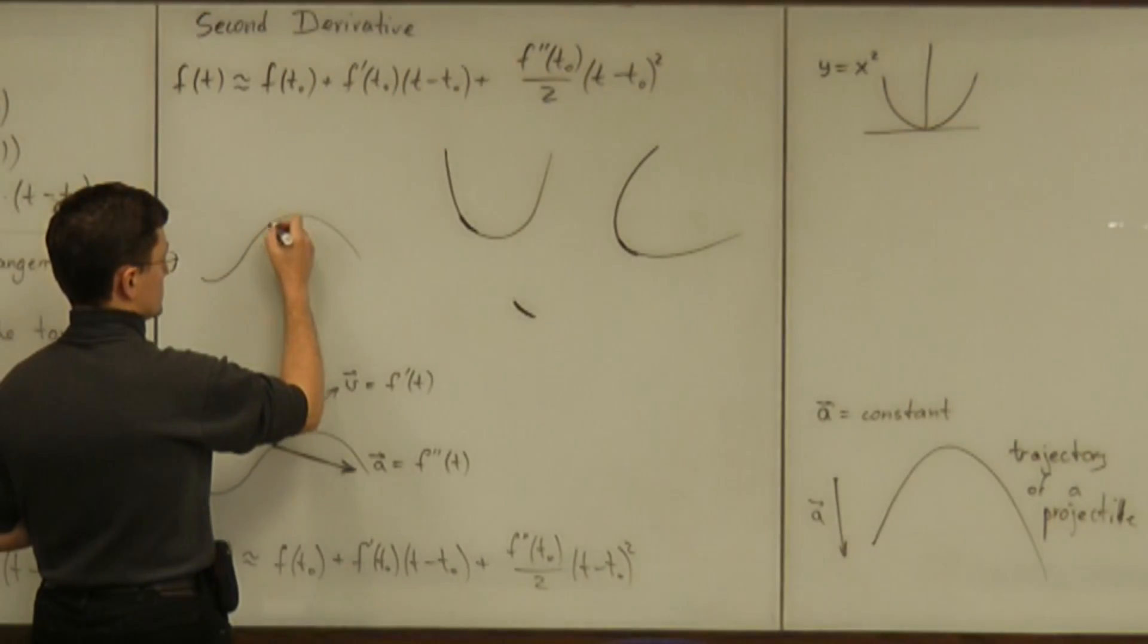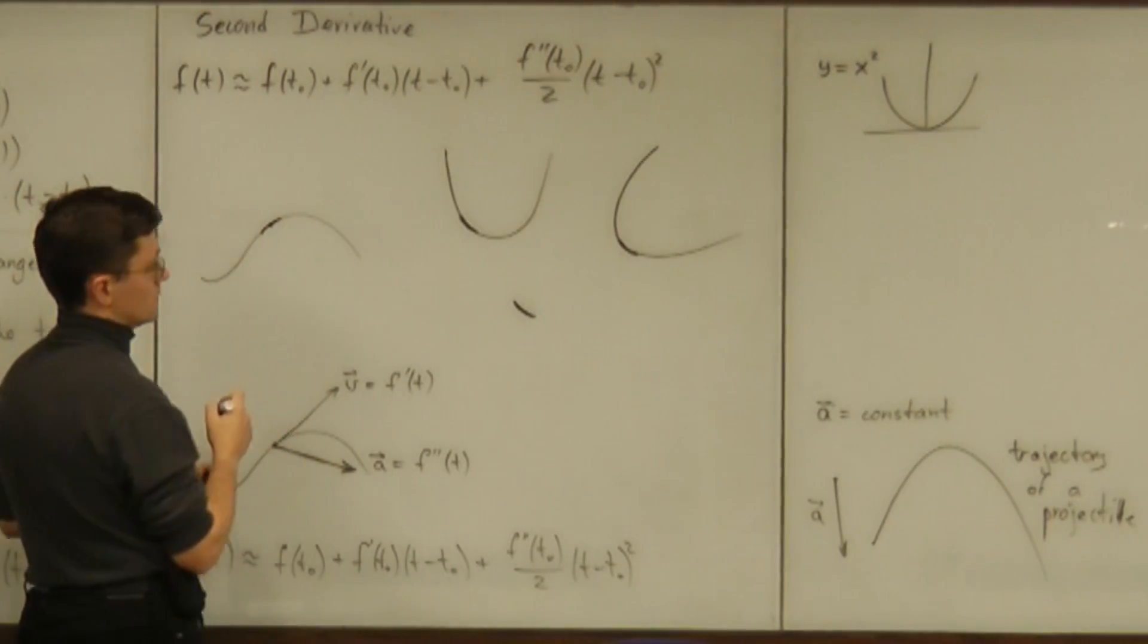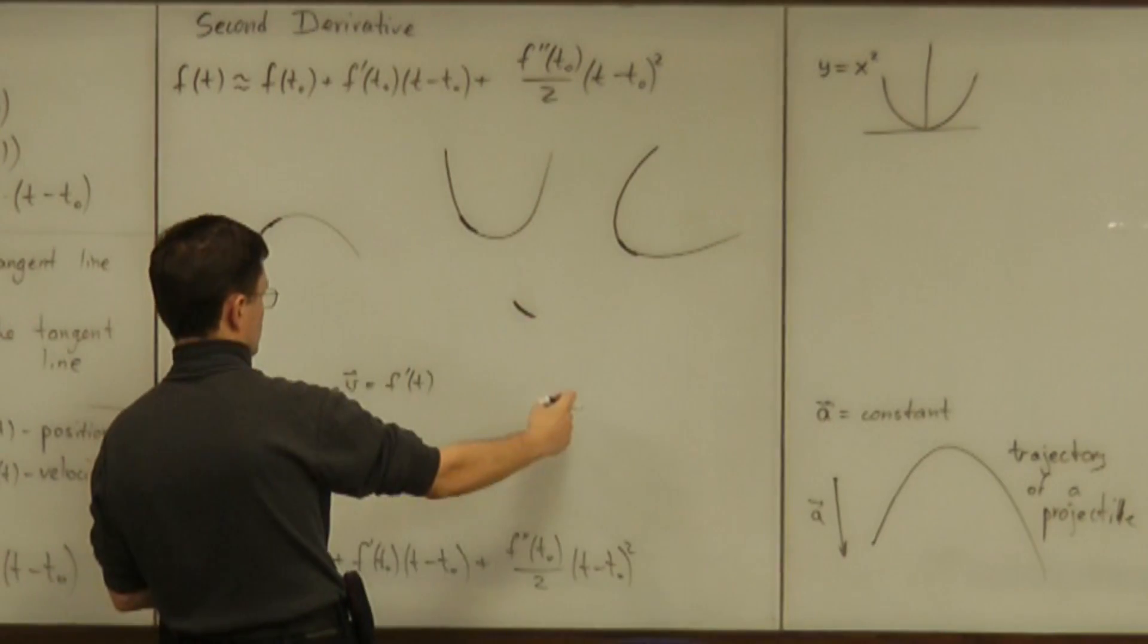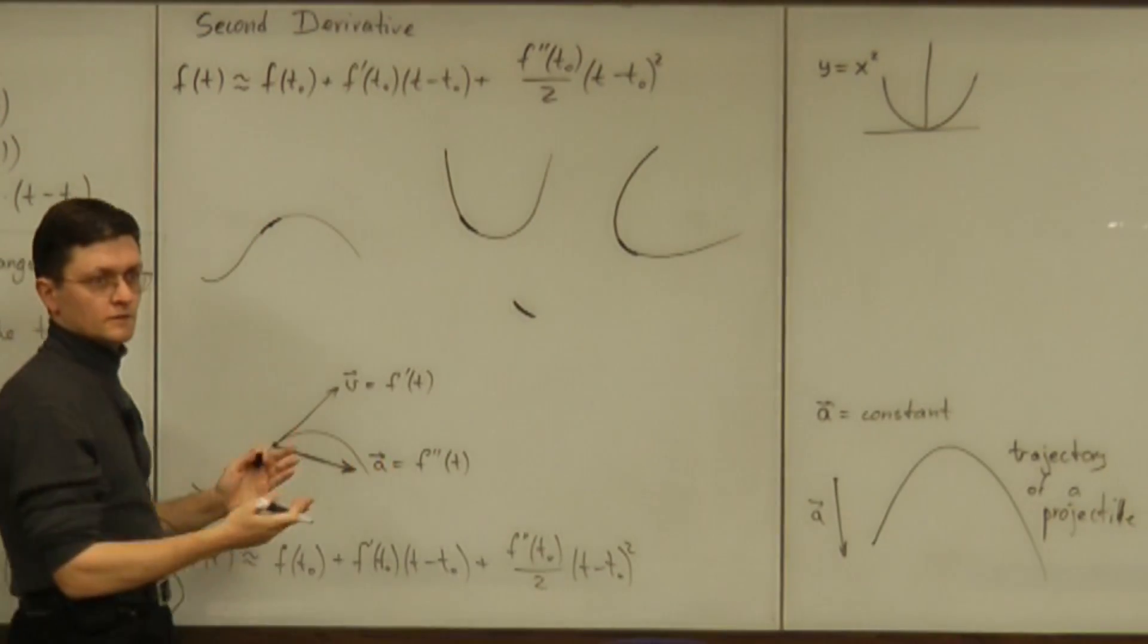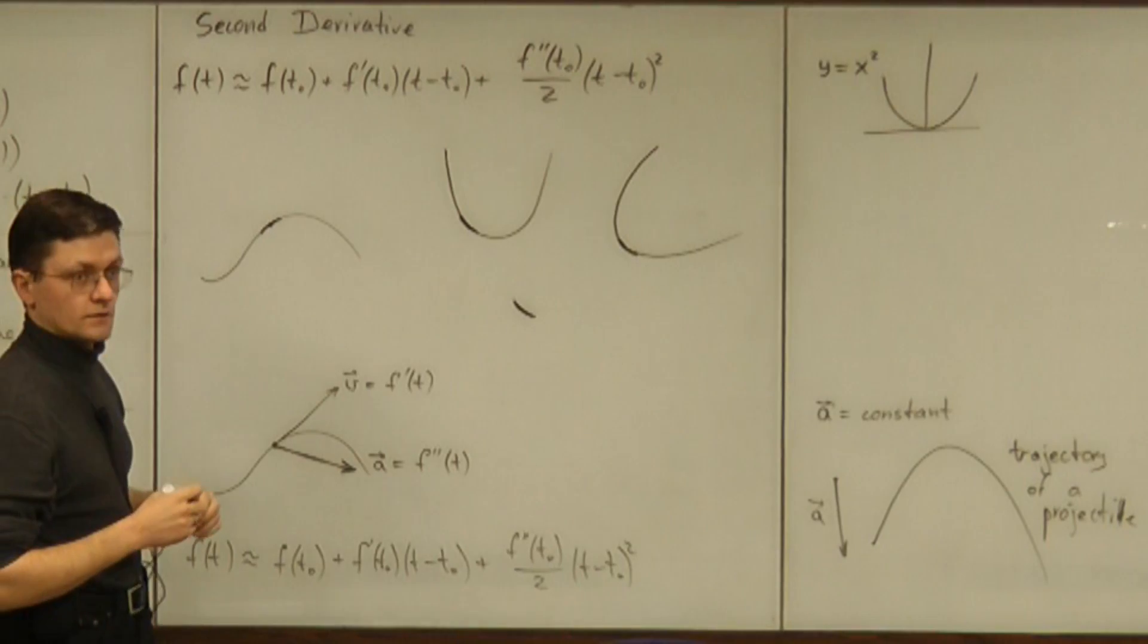If we see this short piece of a curve, is it going to be a piece of that parabola or a piece of this parabola? It doesn't work geometrically for us.